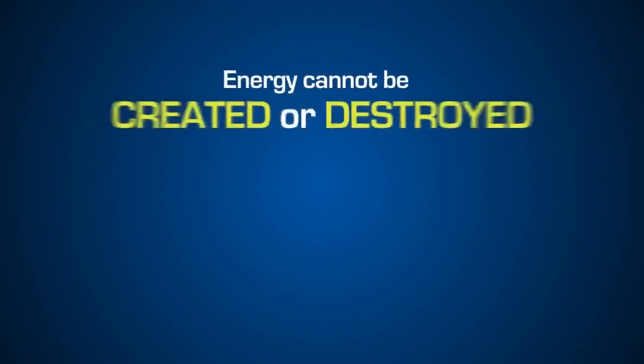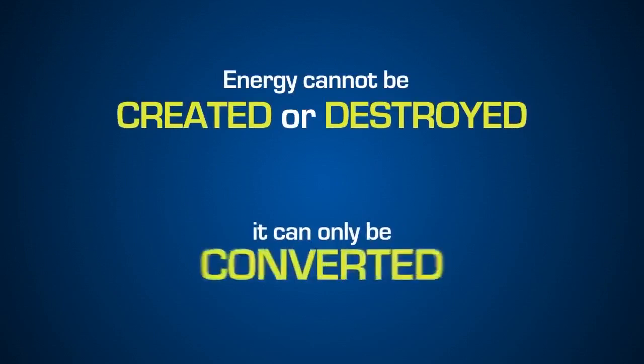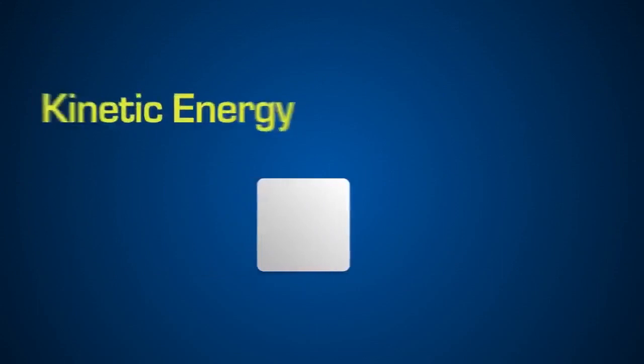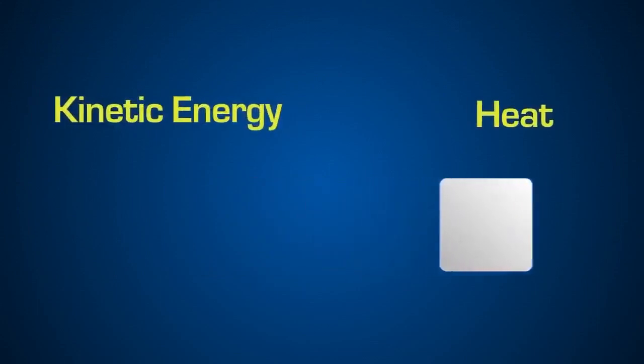Now, it's important to note that energy cannot be created or destroyed. It can only be converted from one form into another. So, how do we slow our moving block once it's in motion? We can convert its kinetic energy to heat using friction.